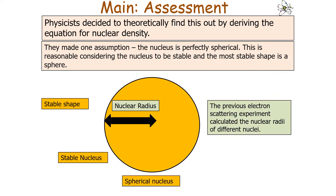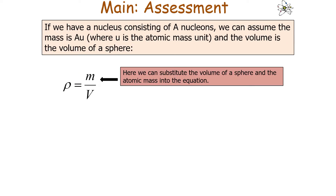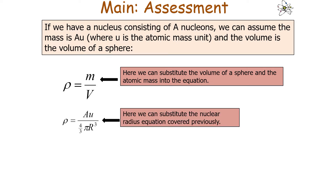The previous electron scattering experiment calculated the nuclear radii of different nuclei, so we can use those nuclear radius measurements to calculate the nuclear density. If we have a nucleus consisting of A nucleons, we can assume the mass of the nucleus is A times u, where u is the atomic mass unit, and the volume is that of a sphere. So density equals mass over volume, giving us rho equals Au over (4/3)πr³.